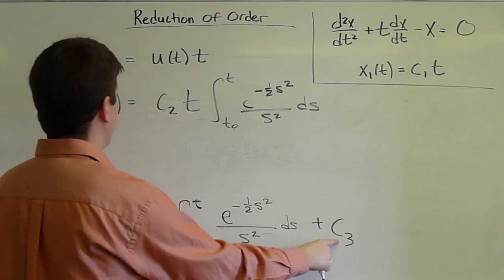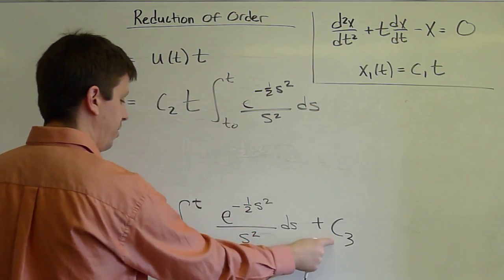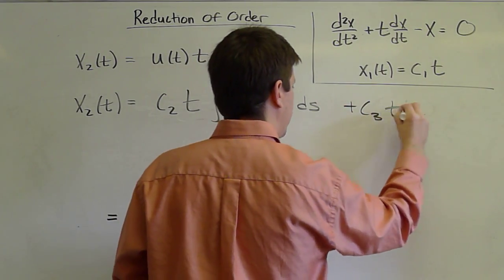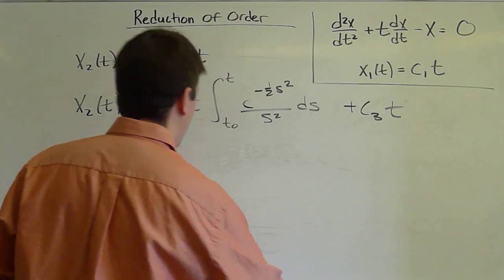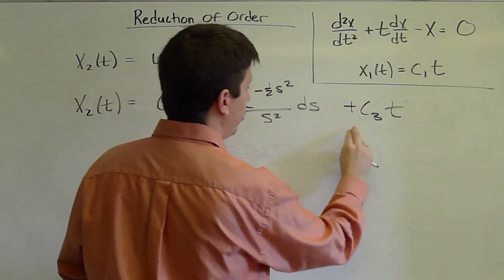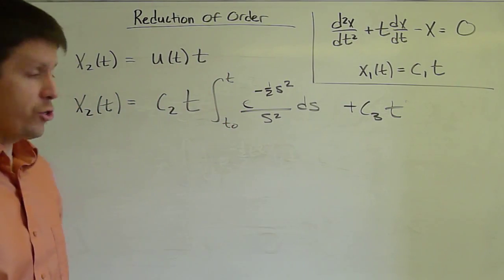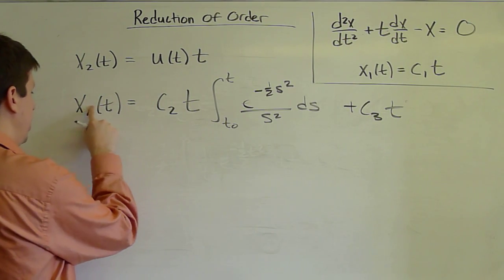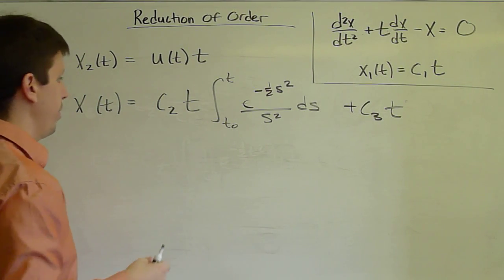Plus c3 times t. Remember c3, this integration constant is part of u. So we have now a second homogeneous solution. It turns out to include a multiple of the first homogeneous solution. So this is, in fact, the general solution. And we can just remove the x2 subscript there.